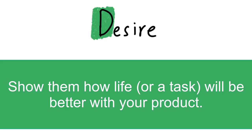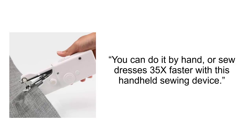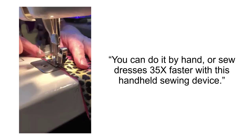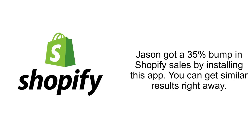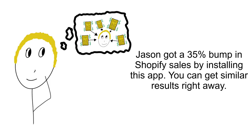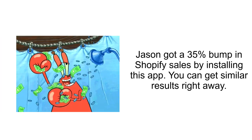Example number one: you can do it by hand or sew dresses 35 times faster with this handheld sewing device. In someone's head, if they're sewing a dress and they have this handheld device, they could do it 35 times faster — that makes their life better. Example number two: Jason got a 35% bump in Shopify sales by installing this app — you can get similar results right away. You start thinking: I make a hundred K a year off these sales, so if I do 35% more, that's 135K. You start envisioning your life with those results.